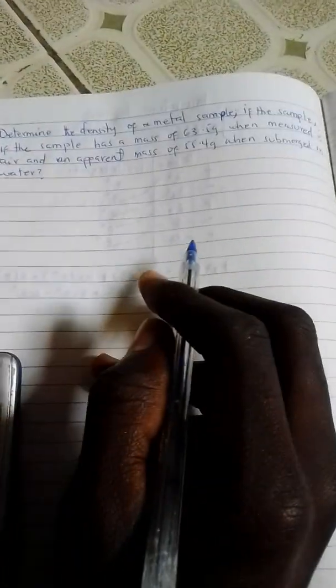From the information given, we can find the relative density using Archimedes' principle. We know that relative density is equal to the weight of a body over the weight of equal volume of water.